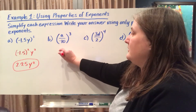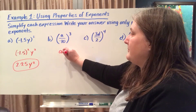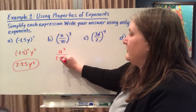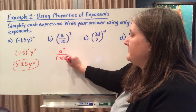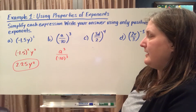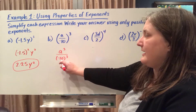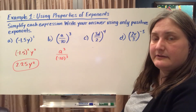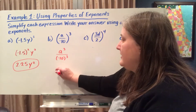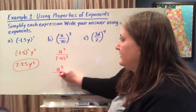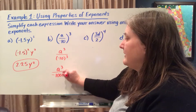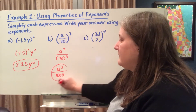In this case, my numerator would be a to the 3rd power and my denominator is negative 10 to the 3rd power. The numerator I can't simplify, but the denominator can. Negative 10 times negative 10 is 100, times another negative 10 is negative 1,000. So a³ over negative 1,000 is my simplified answer.